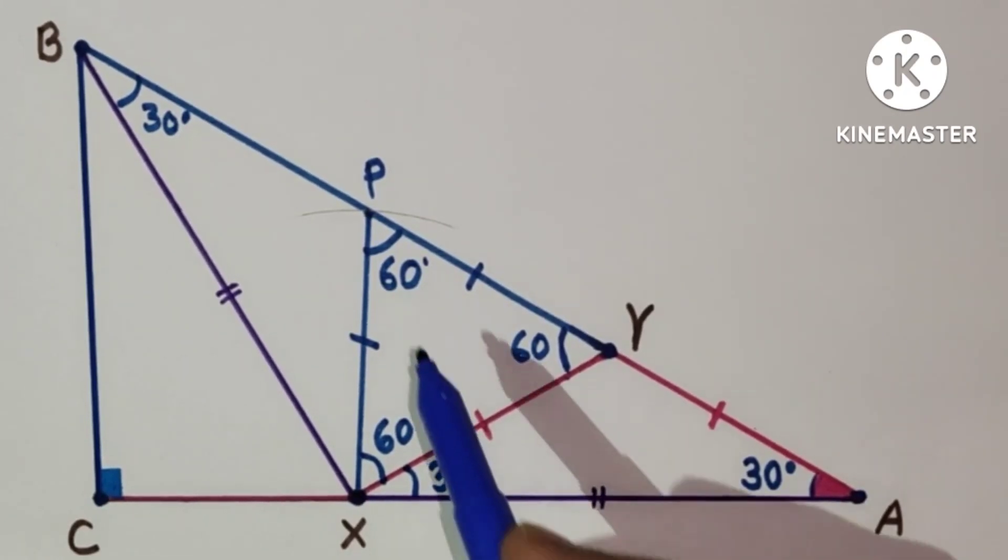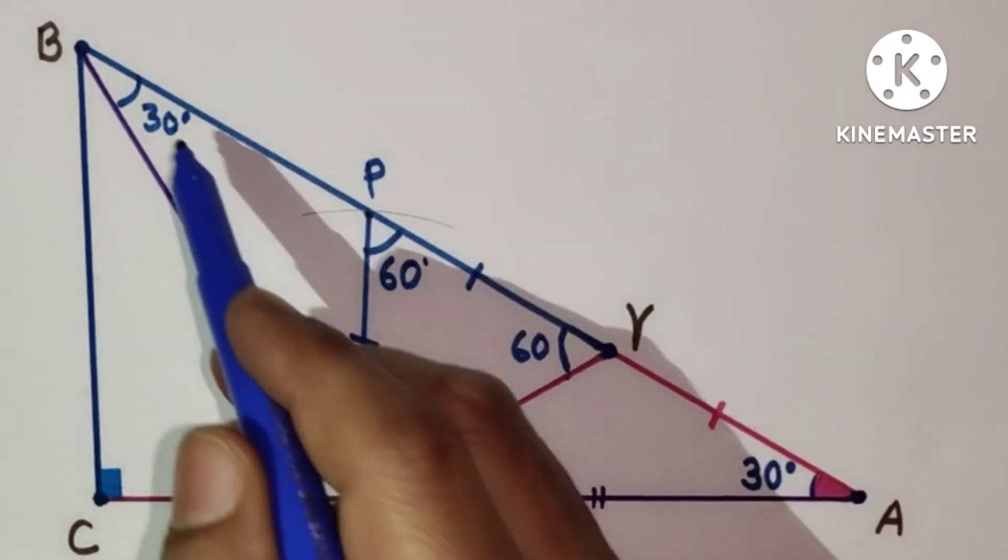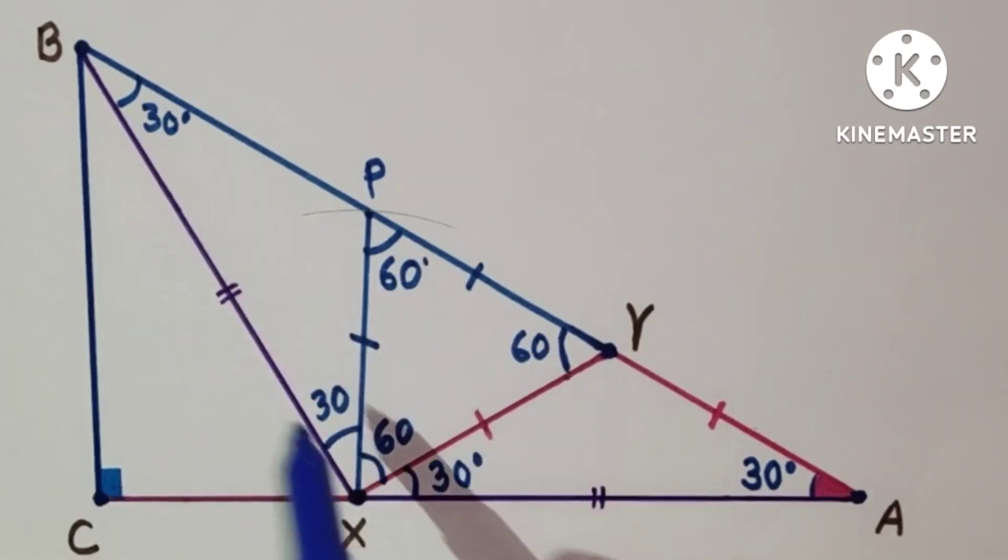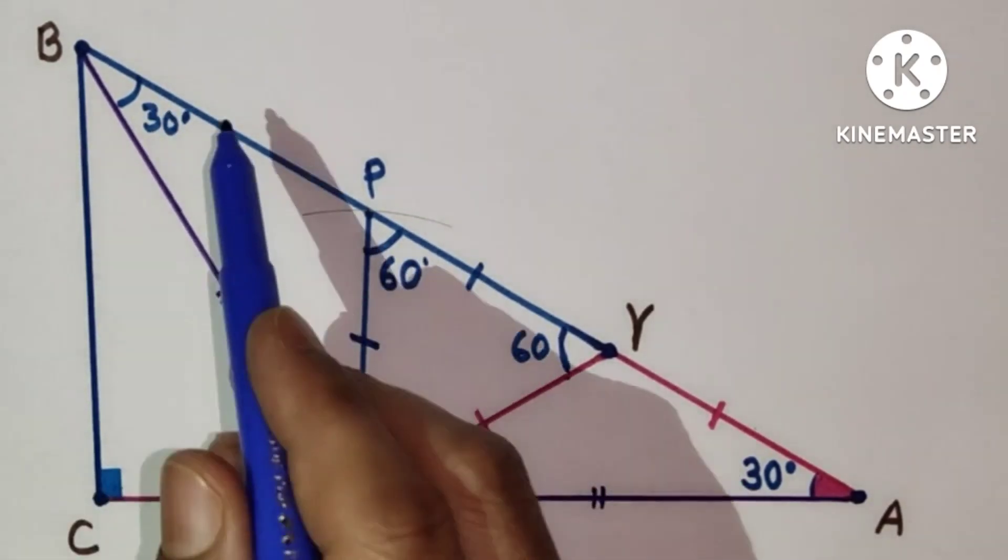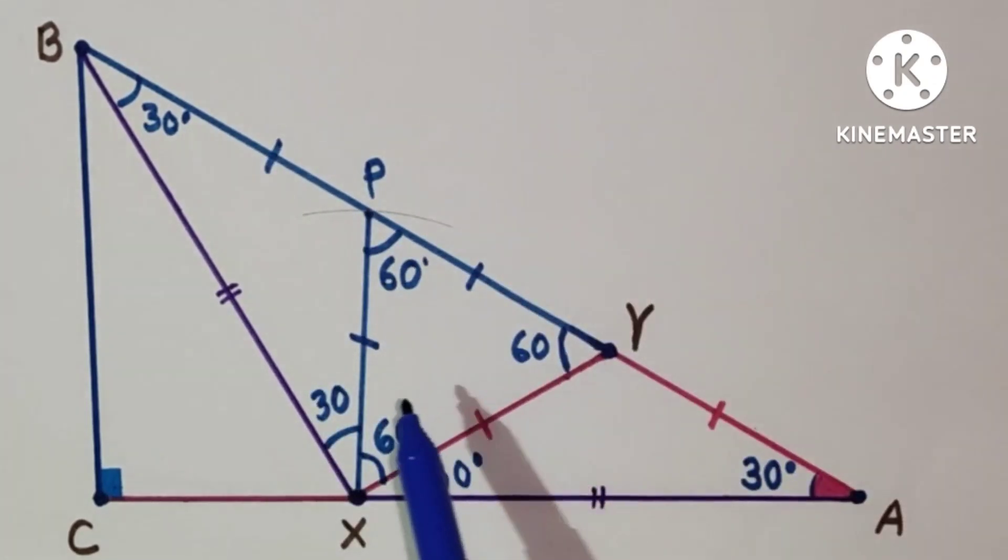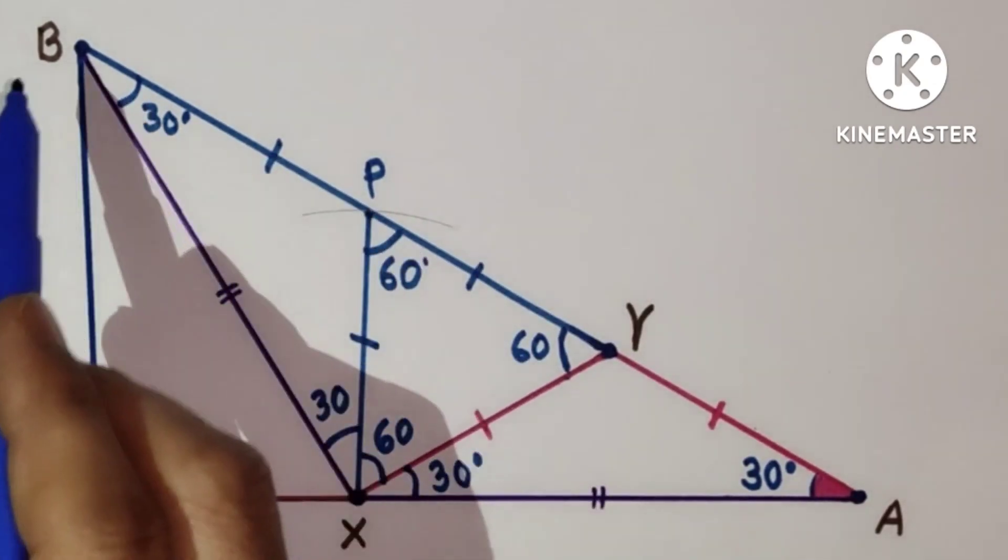Now this is 60 degrees. This is 30, so this will also be 30 degrees. If these two angles are equal then these two sides will also be equal. It means PX is equal to PB.